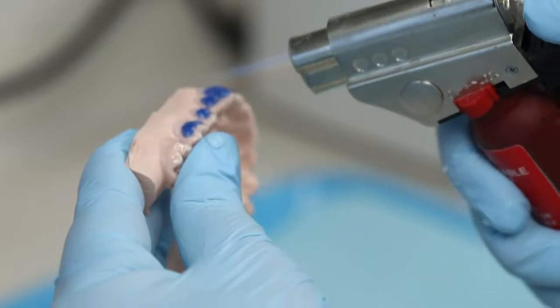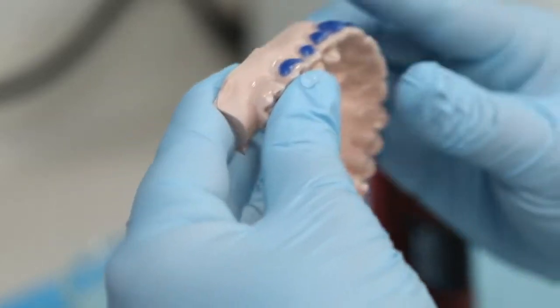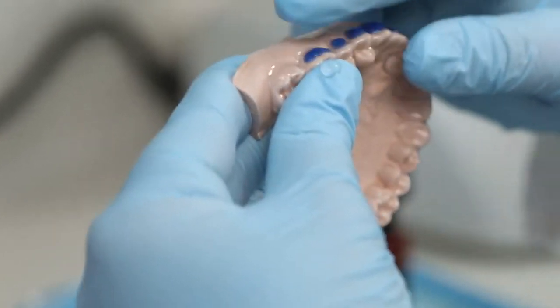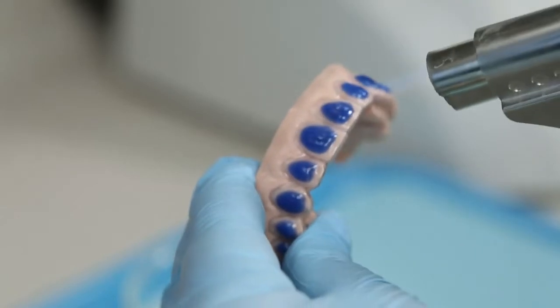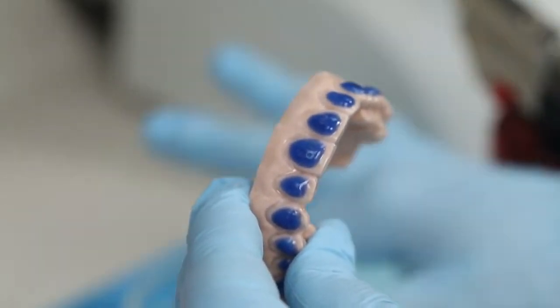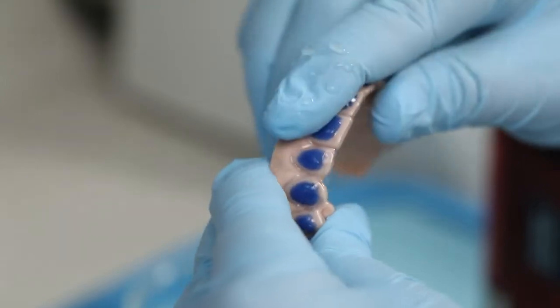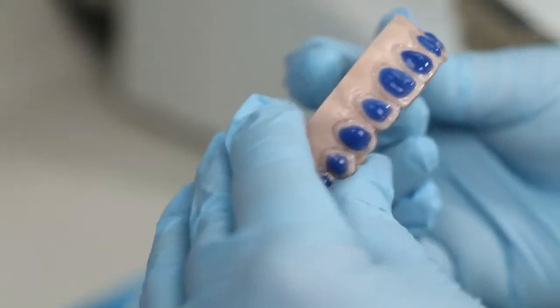Gently flame polish edges one quadrant at a time if necessary with a butane torch. While still warm, immediately hold periphery of each segment firmly against model for 3 seconds with water-moistened gloved finger.